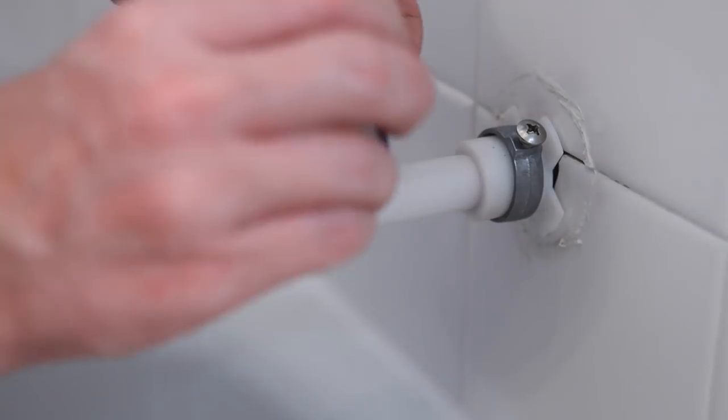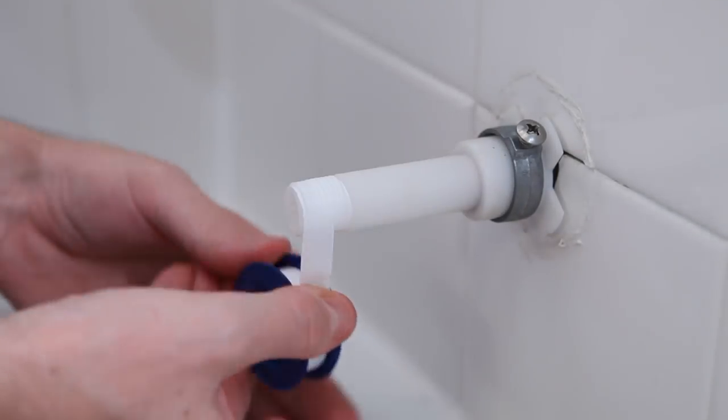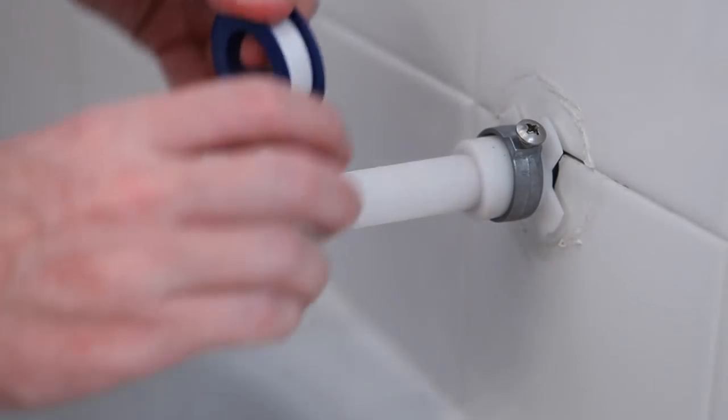Next, apply two to four turns of pipe thread tape to the male end of the extension nipple in a clockwise direction.